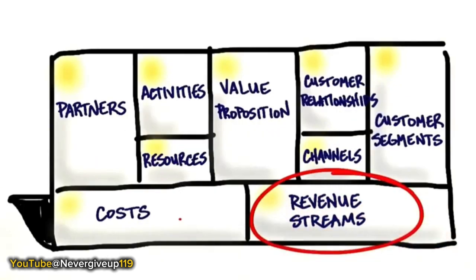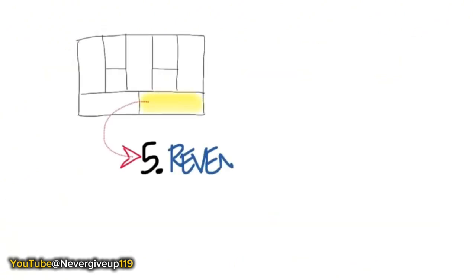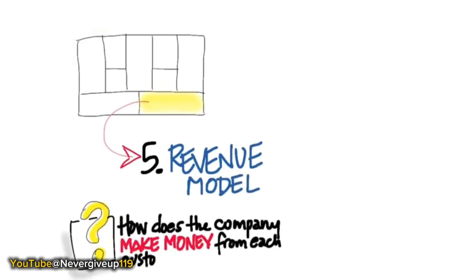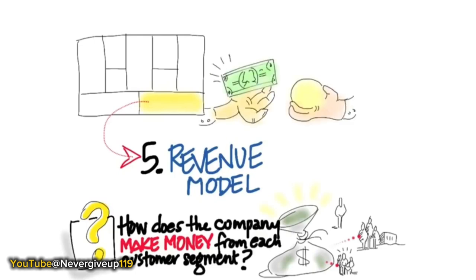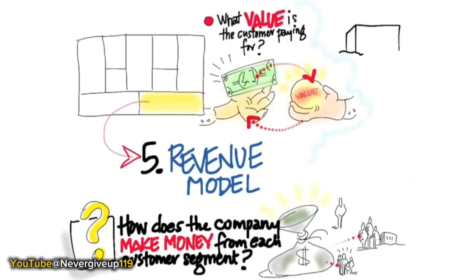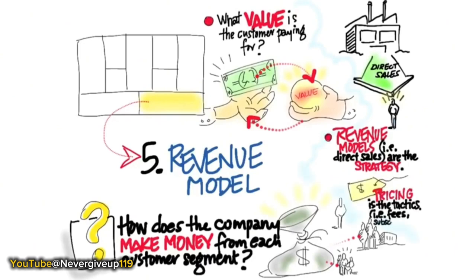Next are revenue streams — how do you actually make money from your product or service being sold to customer segments? Revenue streams basically ask: what value is the customer paying for, and what's the strategy for capturing that value? Is it a direct sale based on price? A freemium model where you give the product away free and hope some portion converts later? A license or subscription model? That revenue model is different from the pricing tactics — the actual dollar, pound, or euro amount you're going to charge. The only way to figure this out is interacting with tens, hundreds, or thousands of customers to understand what the right revenue stream and model is.